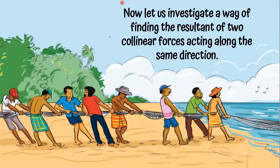We have a picture for our example of pulling fishing nets. Let us investigate a way of finding the resultant of two collinear forces acting along the same direction.